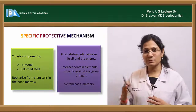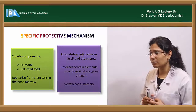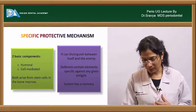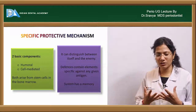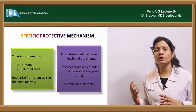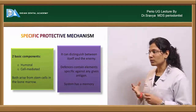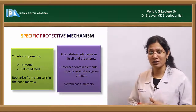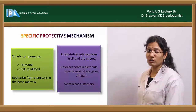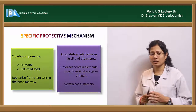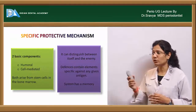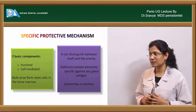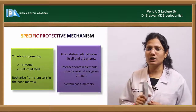Specific immunity has certain features: it can differentiate between a bacterial cell and a host cell — detecting the pathogen or antigen from the host cell. Immunity should not start destroying host cells, as that would lead to autoimmunity. So this specific protective mechanism has the property to distinguish between the cell and its enemy, and contains elements specific to certain pathogens.